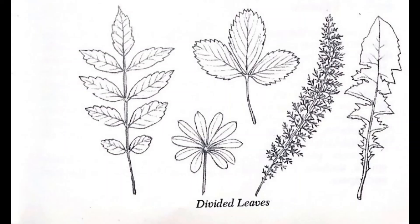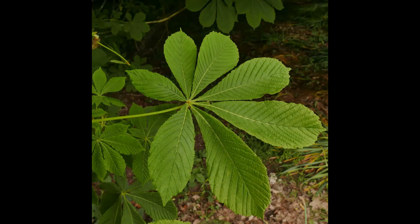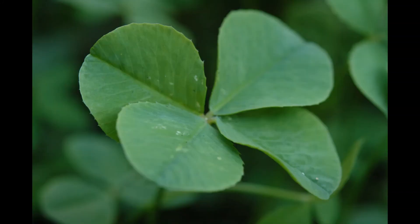The last section of leaves are divided leaves, which are leaves separated into entirely separate parts, known as leaflets. Divided leaves are leaves where teeth or lobes are so pronounced that they nearly touch the mid-vein of the leaf. Clover leaves are good examples of divided leaves, since they are actually divided into three or four leaflets.